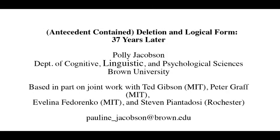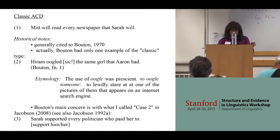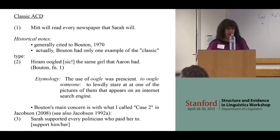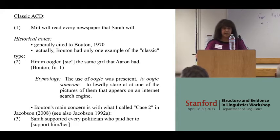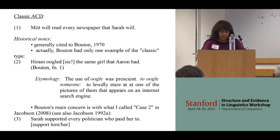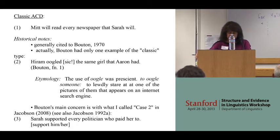What I'm going to talk about today is what I'm calling classic antecedent contained deletion, or ACD, as illustrated in example one: 'Mitt will read every newspaper that Sarah will.' This is often cited to Bouton 1970, and it actually is there in one sentence in a footnote. Most of his paper was concerned with a closely related construction, but he did have one example of this type, which was literally: 'Hiram oogled the same girl that Aaron had.'